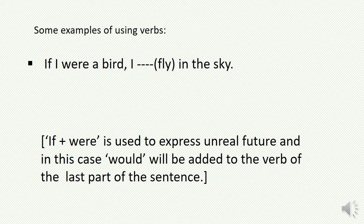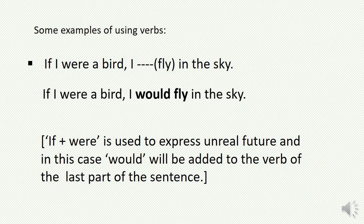We have another example: 'If I were a bird, I ___ fly in the sky.' If you have a sentence with 'if' and 'were,' this is used to express an unreal future situation. In this case, you have to add 'would' before the verb. So the answer will be: 'If I were a bird, I would fly in the sky.'